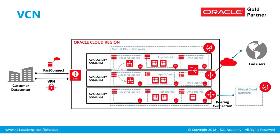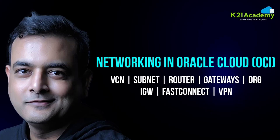Within cloud we'll look at things like virtual cloud network, subnets, different types of gateways — that's internet gateway and dynamic routing gateways — and when you create a machine on Oracle Cloud, how that machine gets an IP address. So everything related to networking.